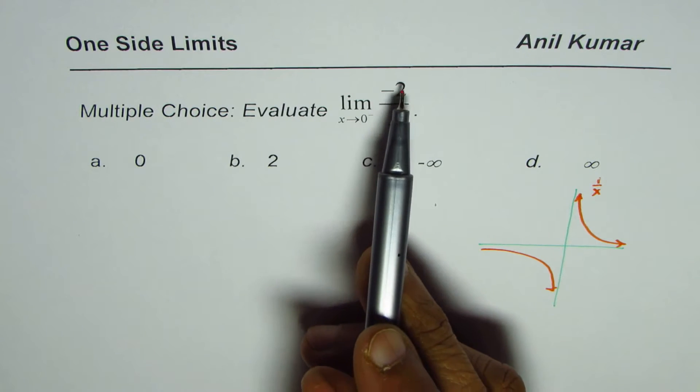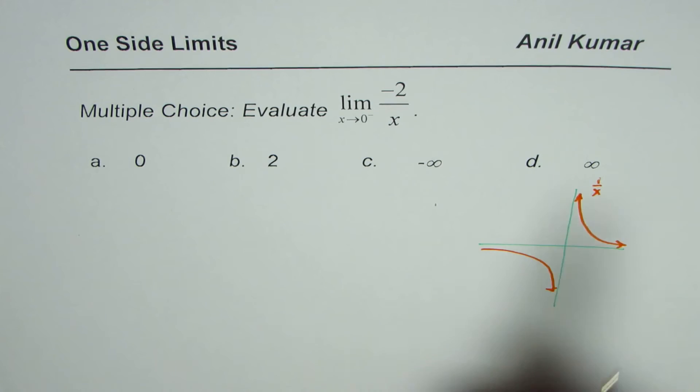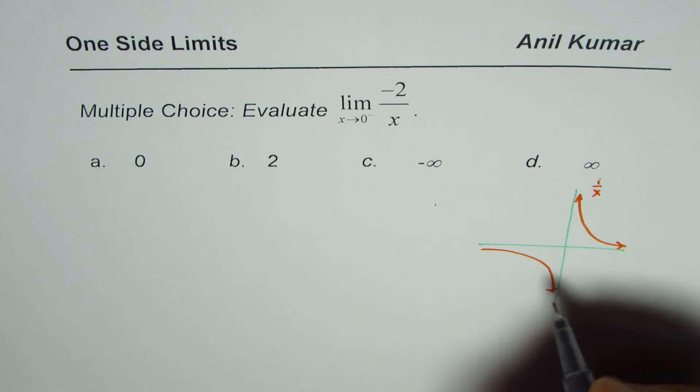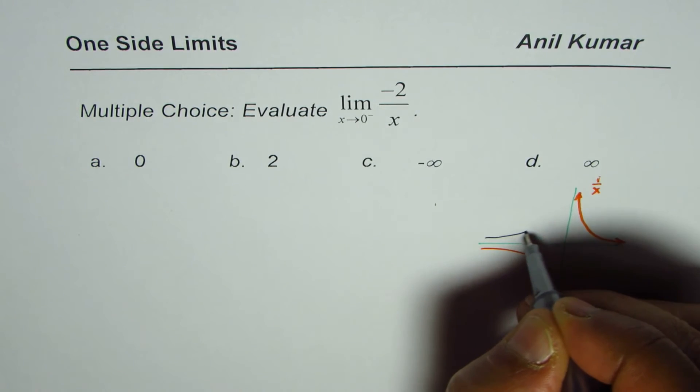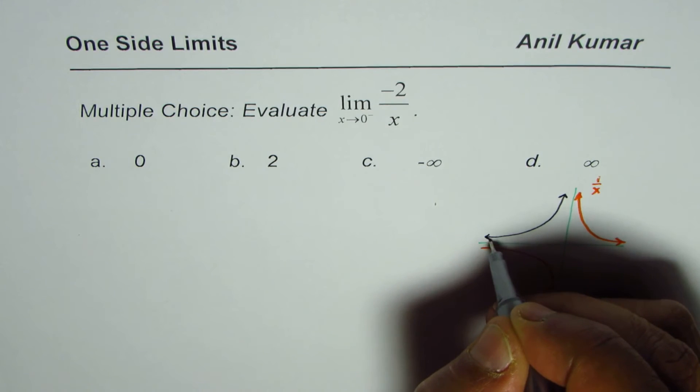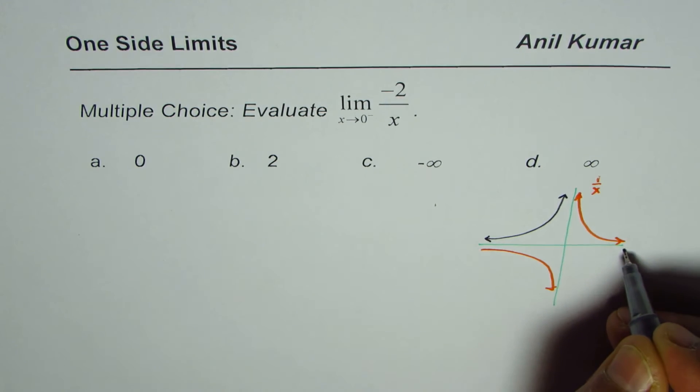But it is minus 2 over x, and therefore, what will happen is that it is going to flip. So, the graph for minus 2 over x is going to be reflected on the x-axis.